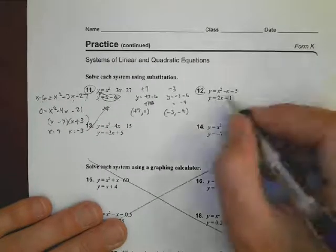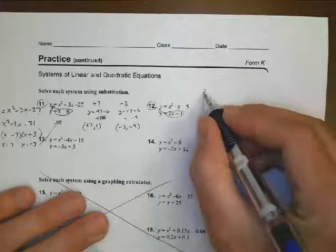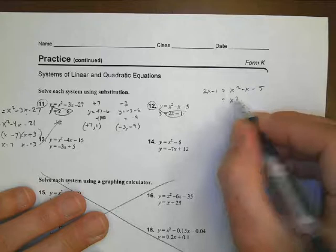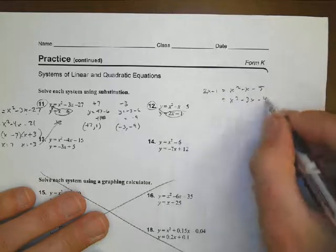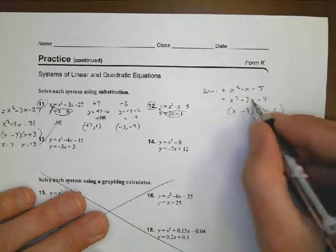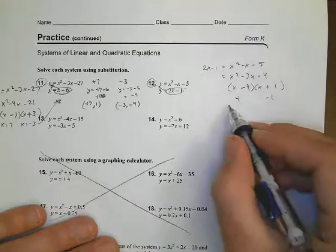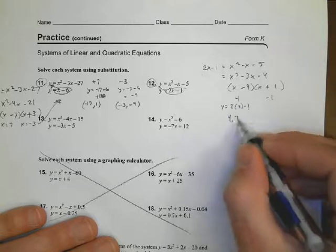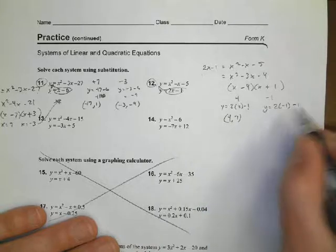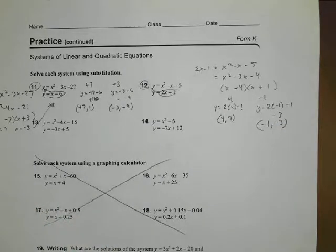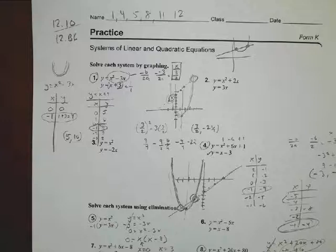For number 12, same idea. I rewrite it as 2x minus 1 equals x squared minus x minus 5. Rearranging: 0 equals x squared minus 3x minus 4. Factoring: 4 is 4 times 1, needing negative 4 and positive 1 to get negative 3x in the middle: (x-4)(x+1). So x=4 and x=-1. Plugging back into y=2x-1: at x=4, y=7, giving solution (4,7). At x=-1, y=-3, giving solution (-1,-3). We have substitution, elimination, and graphing — pick which one works best for you. Hope that helps.